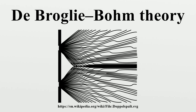If we modify this experiment so that one slit is closed, no interference pattern is observed. Thus, the state of both slits affects the final results. We can also arrange to have a minimally invasive detector at one of the slits to detect which slit the particle went through. When we do that, the interference pattern disappears. The Copenhagen interpretation states that the particles are not localized in space until they are detected, so that if there is not any detector on the slits, there is no information about which slit the particle has passed through. If one slit has a detector on it, then the wave function collapses due to that detection.